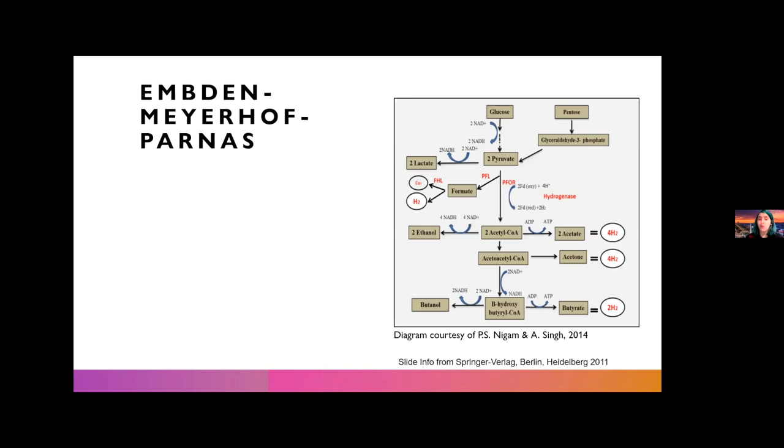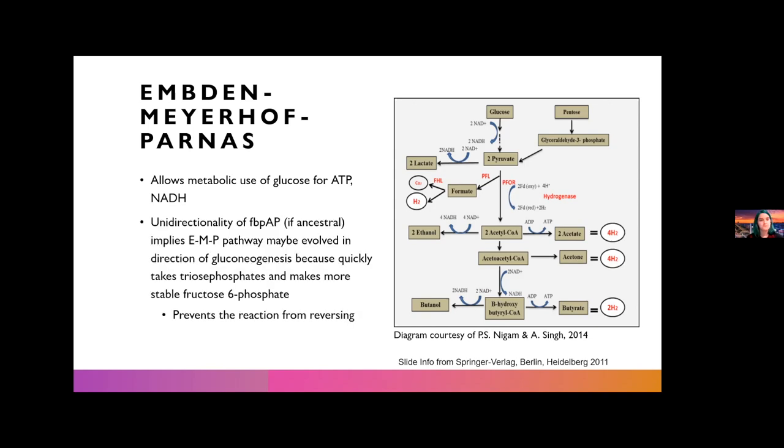So talking a bit more about the unidirectionality of the reaction FBPAP catalyzes, let's discuss the Embden-Meyerhof-Parnas pathway, which is a pathway that allows metabolic use of glucose for ATP and NADH, which, as we know, is generally the energy that we use. So the importance of FBPAP possibly being the enzyme that allowed early life to do some of its carbon fixation is because if it is the ancestral enzyme, it implies this pathway evolved in the direction of gluconeogenesis, because it takes triose phosphate and makes it into a more stable fructose phosphate so that it won't change and it prevents the reaction from reversing, which of course implies that if it originally only went one way, then it evolved specifically for that direction and then later changed to go both ways.